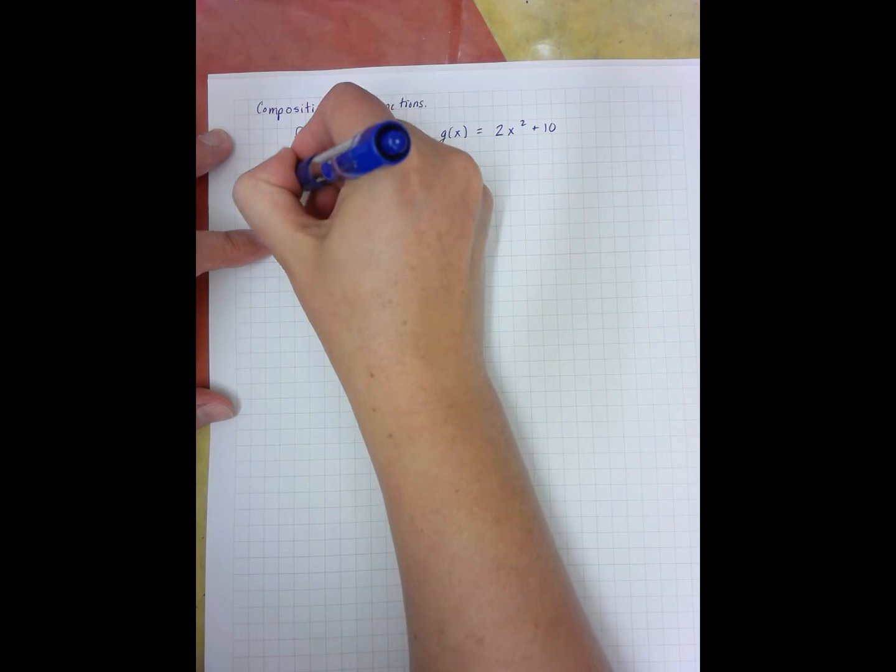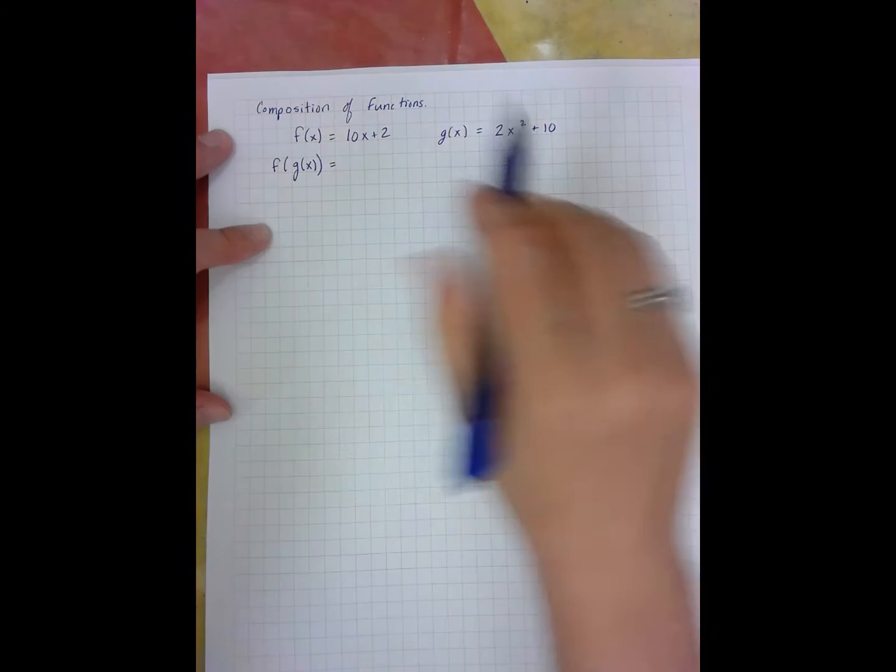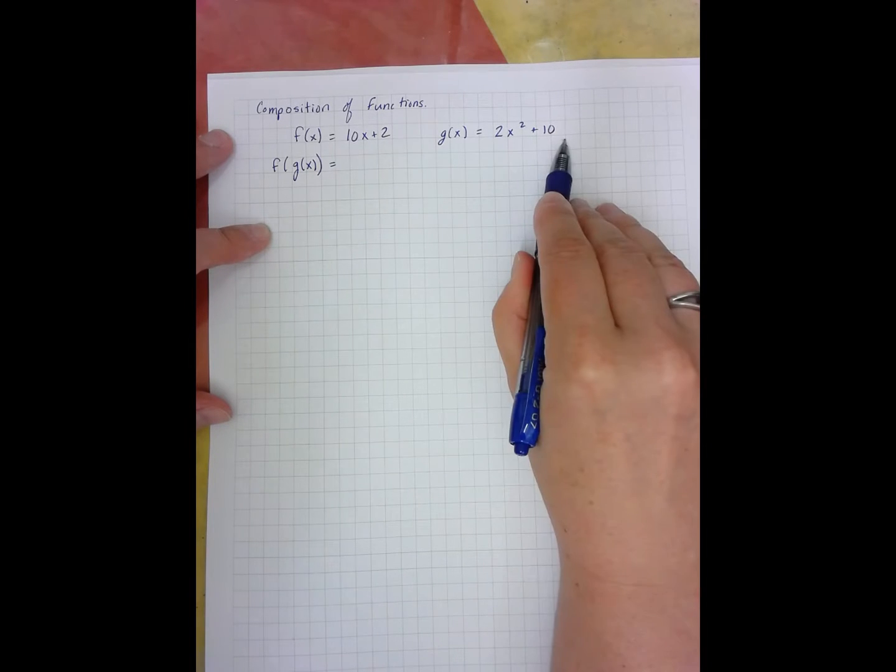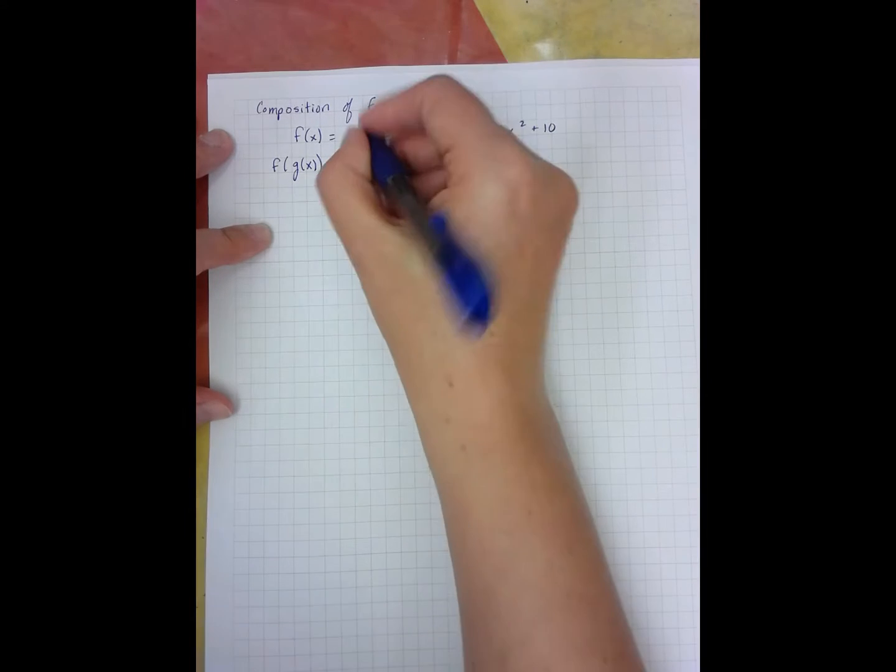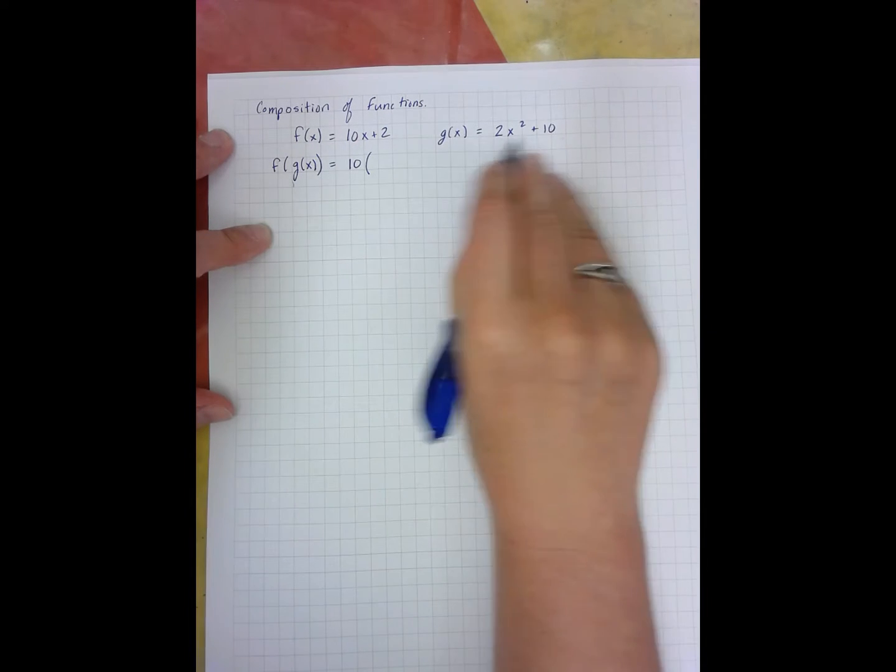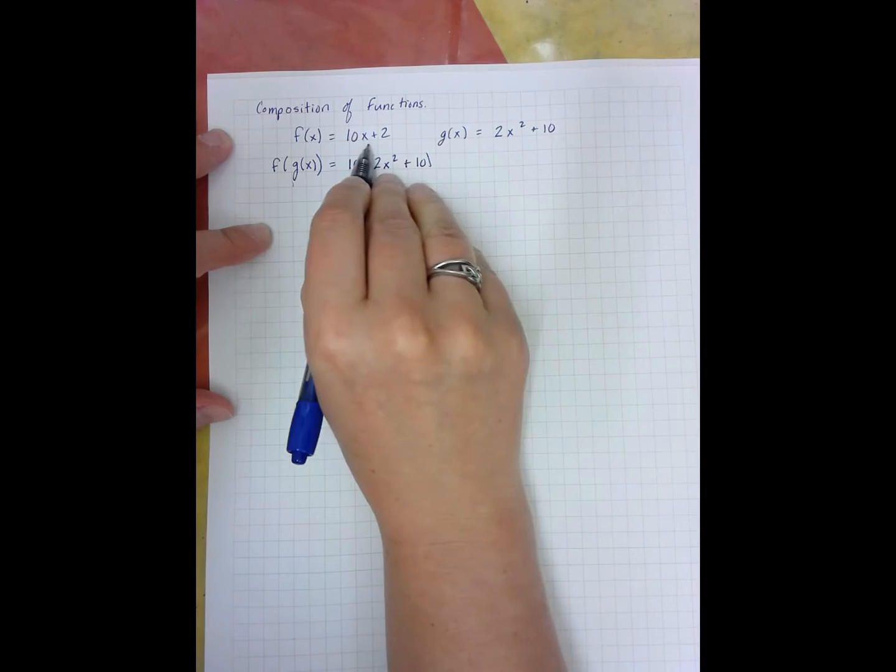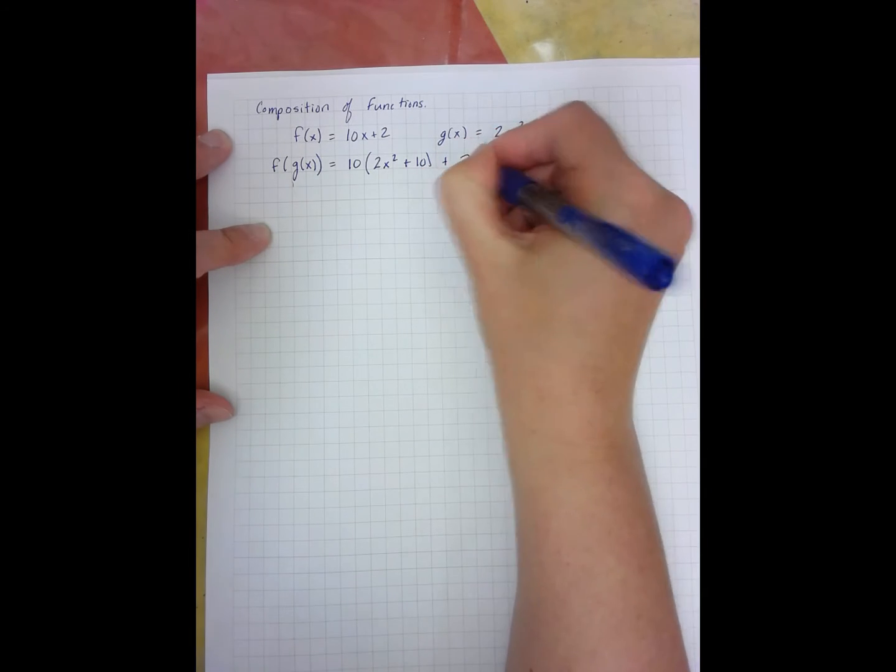When I find f of g of x, it means I'm going to plug this function in for x. So 10 times my g of x function, 2x squared plus 10, and I finish my f of x function plus 2.